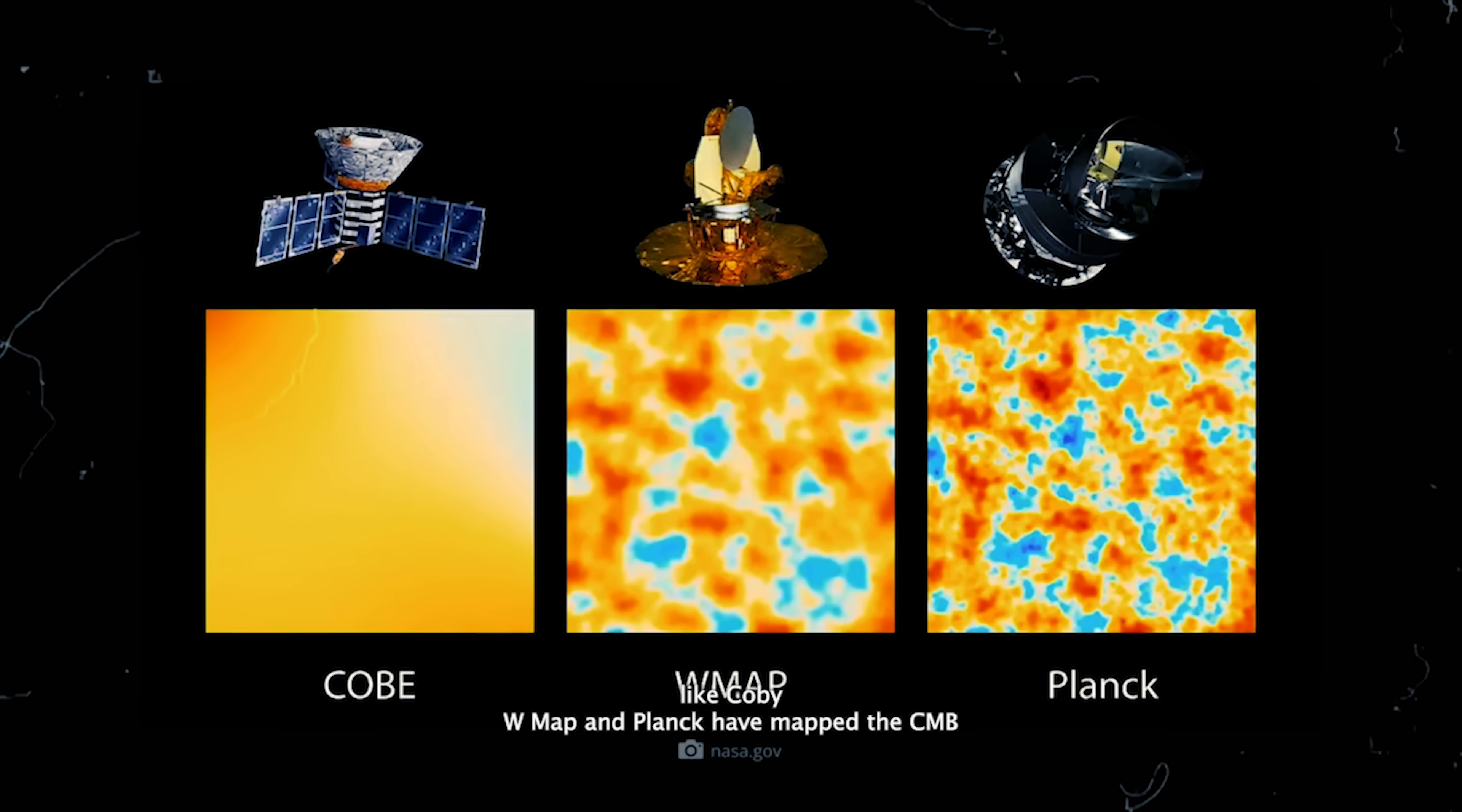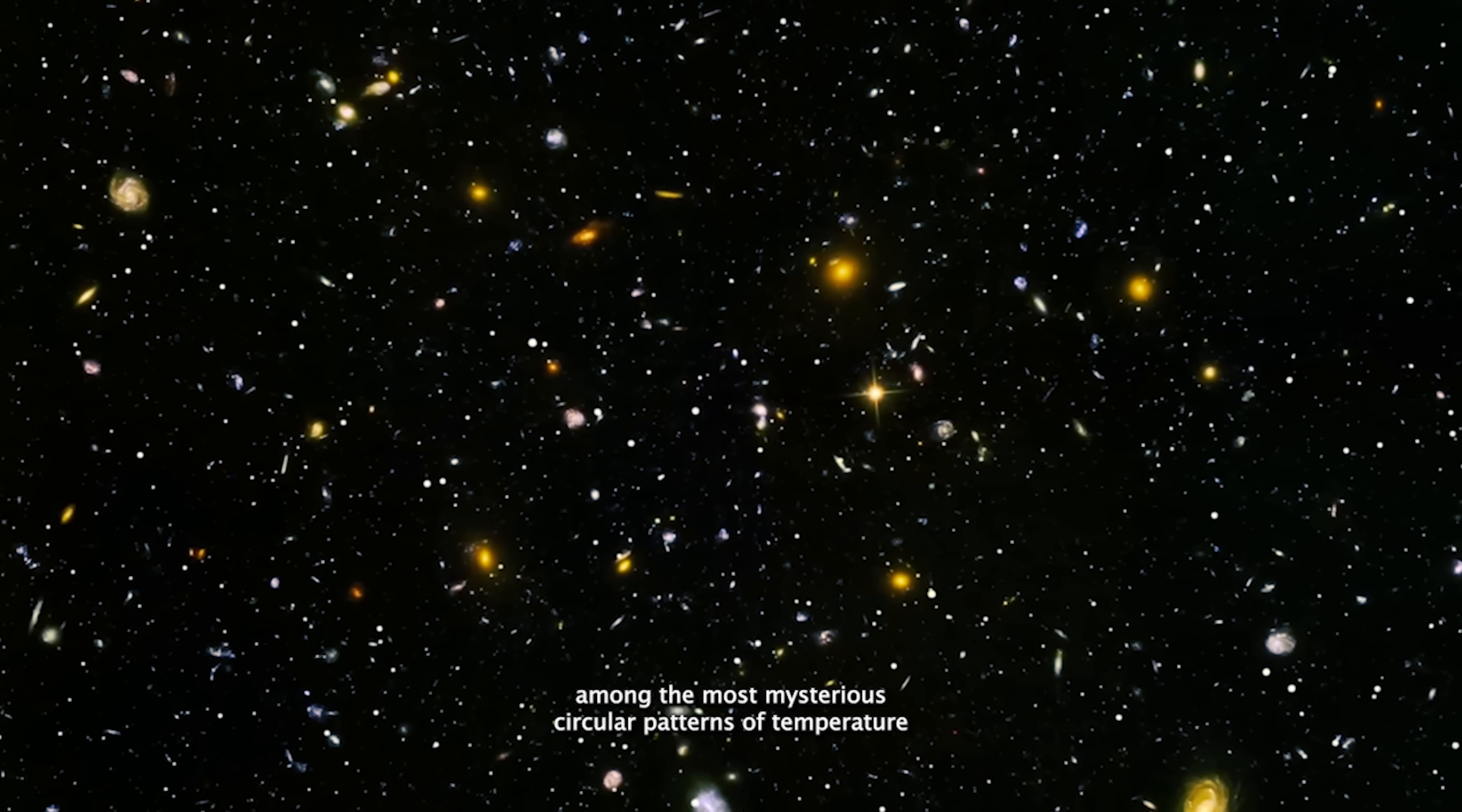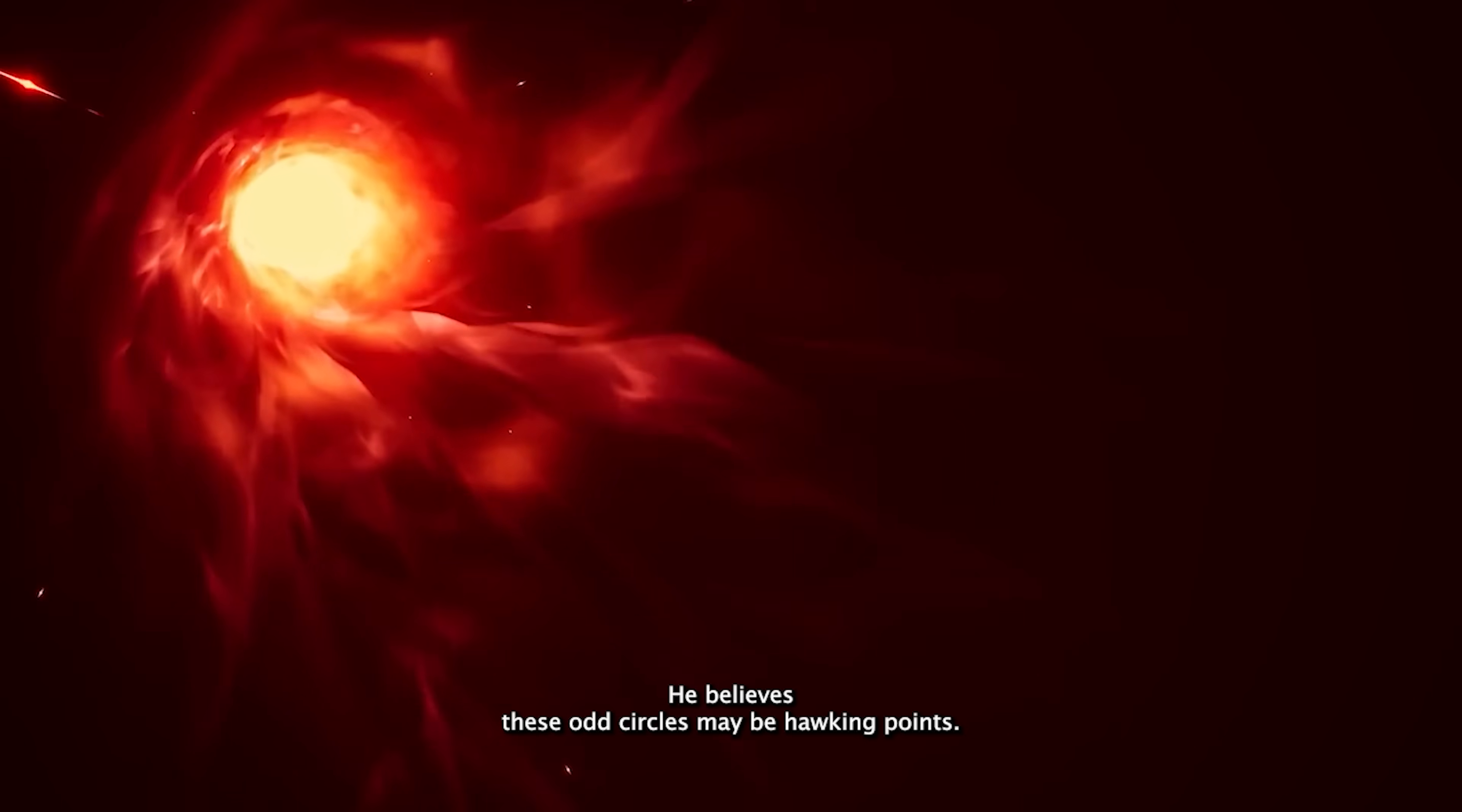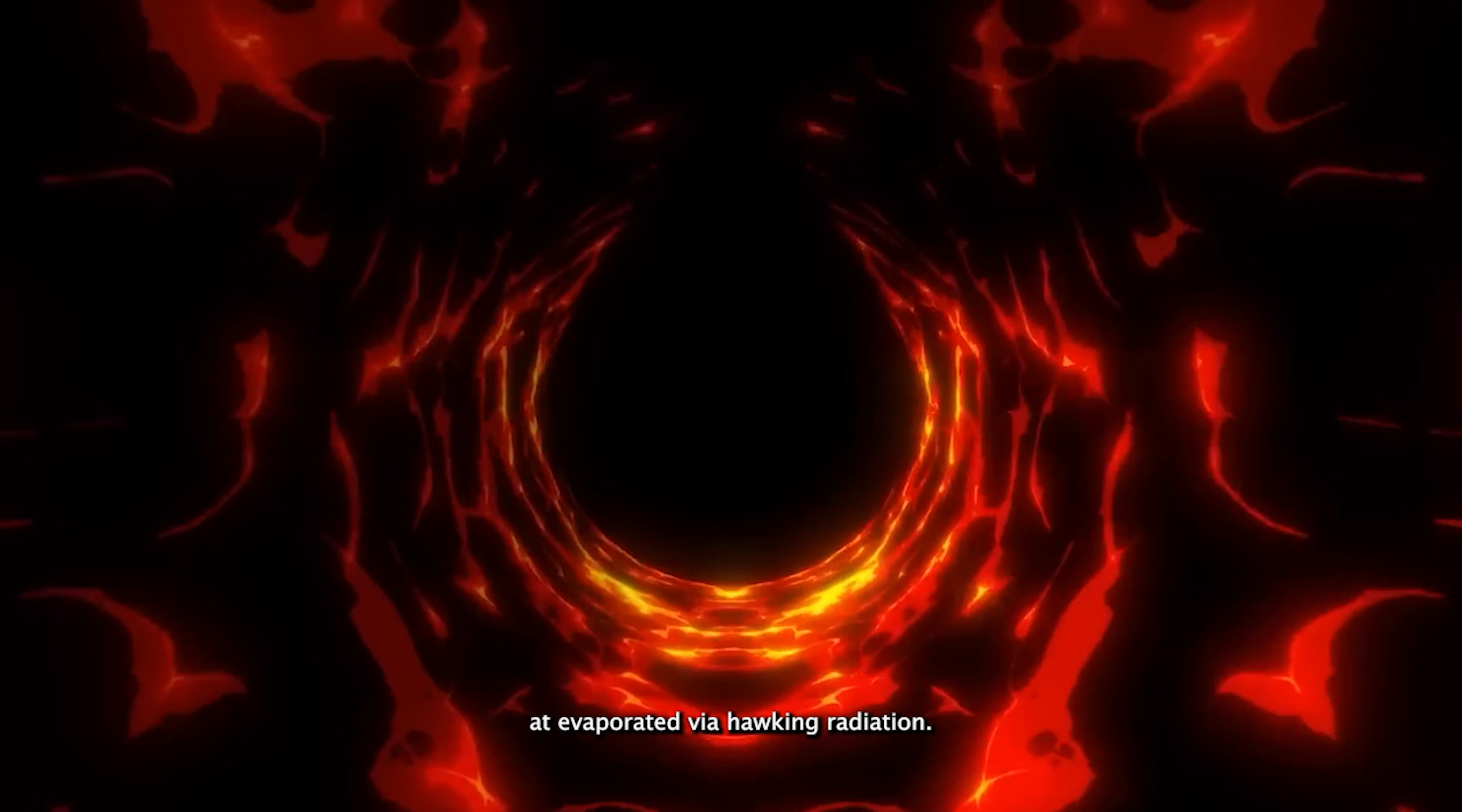Earlier missions like COBE, WMAP, and Planck have mapped the CMB with incredible precision and spotted some puzzling irregularities. Among the most mysterious? Circular patterns of temperature that just don't line up with the standard model of cosmology. Enter Sir Roger Penrose once again. He believes these odd circles may be Hawking points, the last traces of supermassive black holes from a previous universe that evaporated via Hawking radiation.